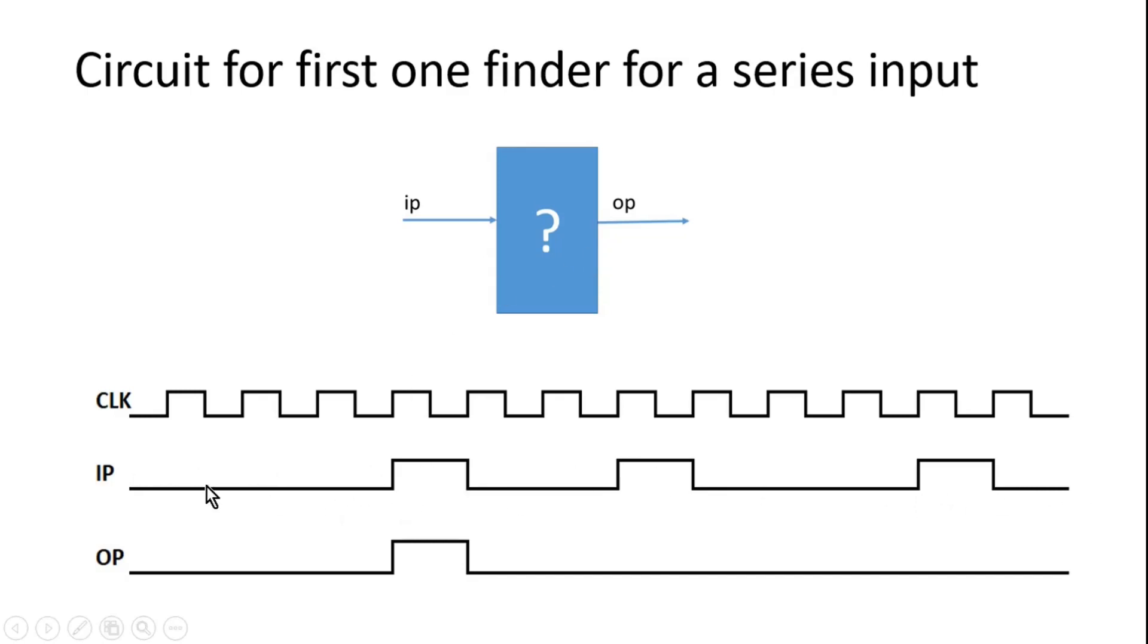Now OP, whenever it detects first one in this series input IP, it will get asserted, otherwise it will remain zero.